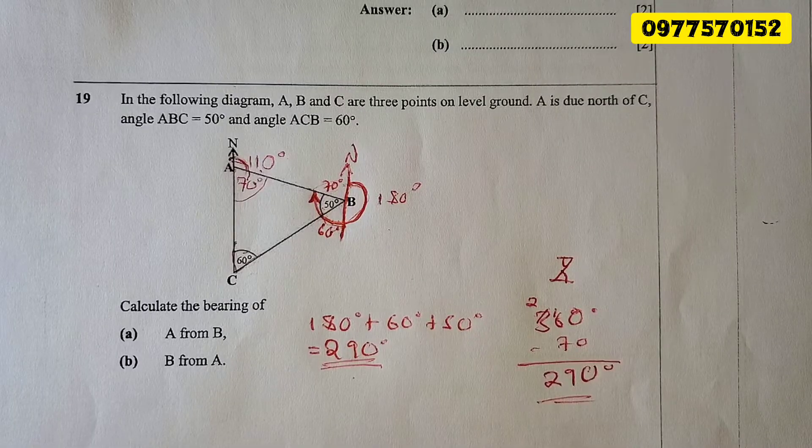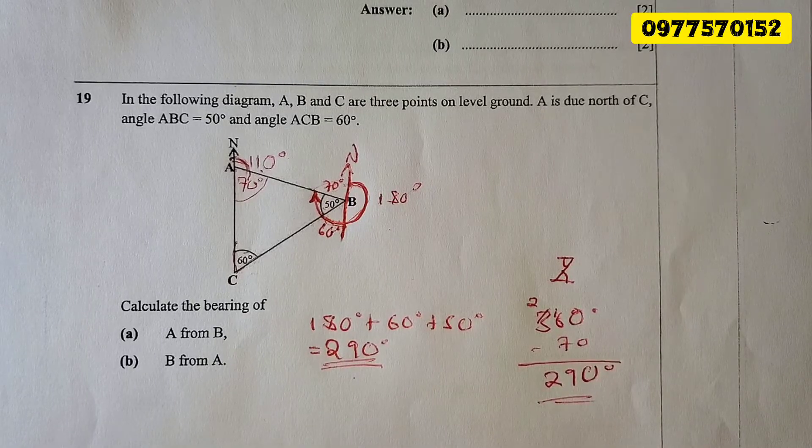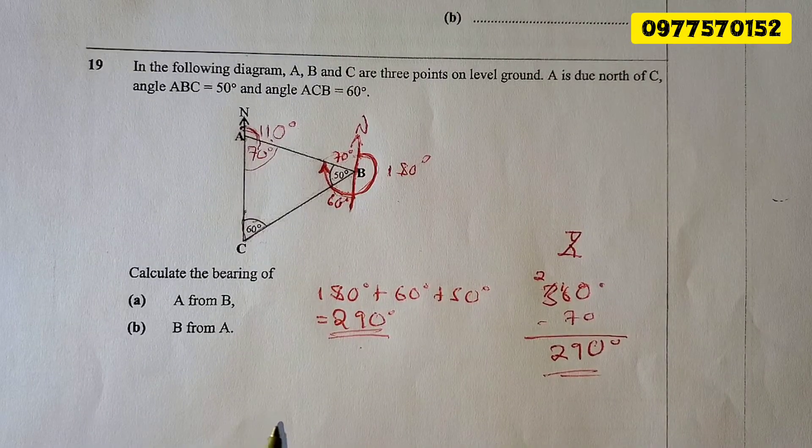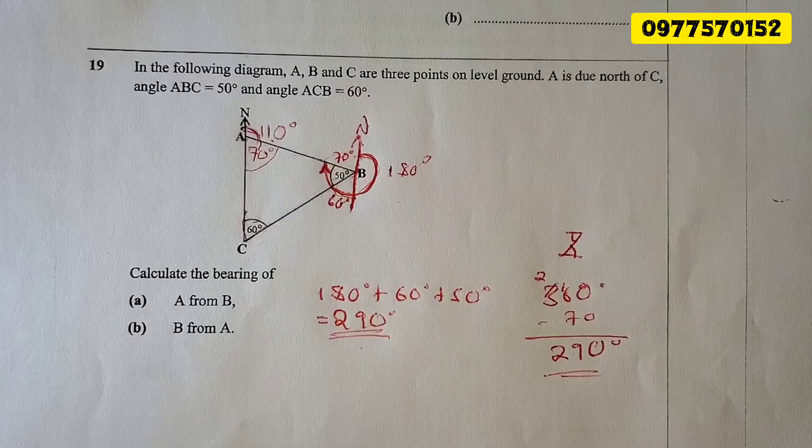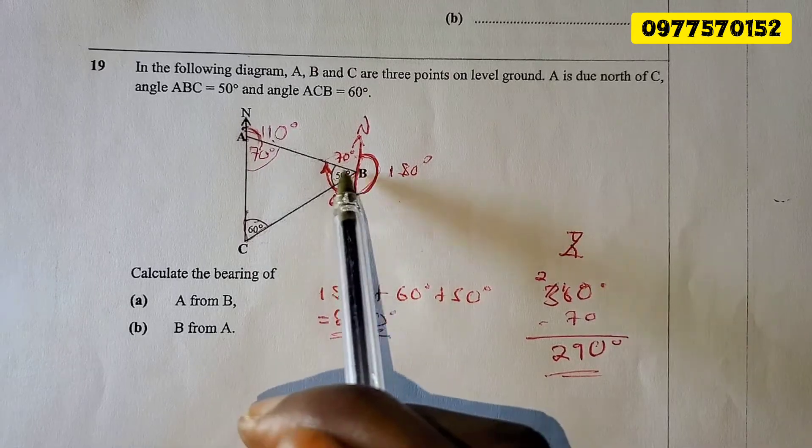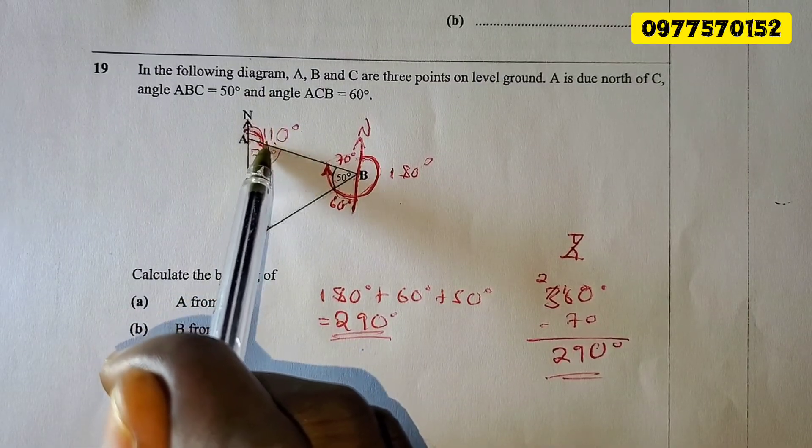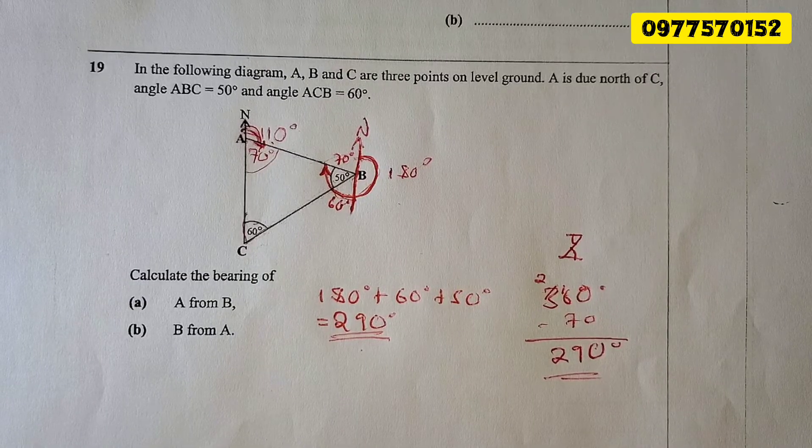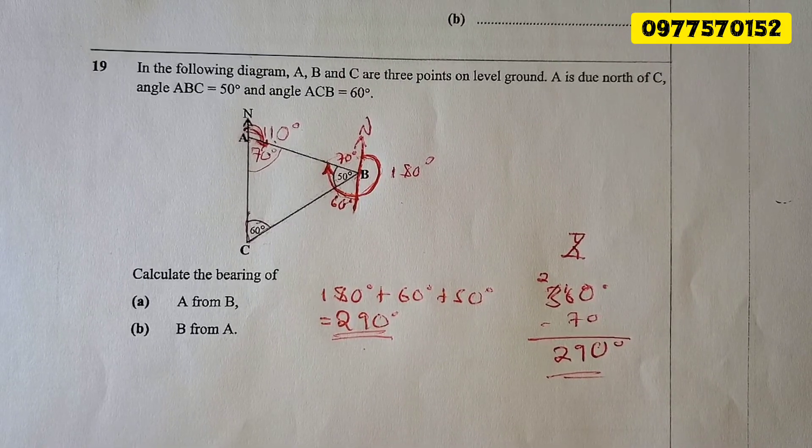Now we have the second question here. They're saying calculate the bearing of B from A. Where is B? B from A. This is very simple. In fact, we've already calculated that. We know the answer is already there. B from A—north is already here. So when you draw a line connecting B and A here, you ask yourself: what is the value there? It is 110.